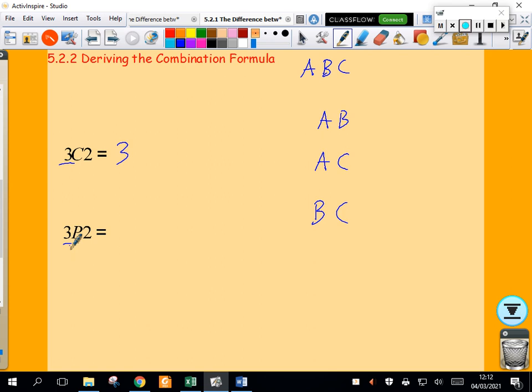But how many permutations are possible? Well, permutations means we can change the order. AB is the same choice as BA but a different permutation. AC is the same choice as CA, BC is the same choice as CB, but different permutations. So there are 6 ways. Notice it was this 3 that we got up here, and then doubled.